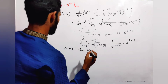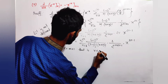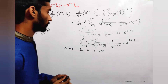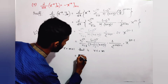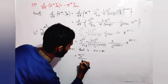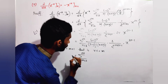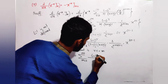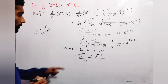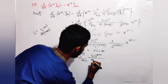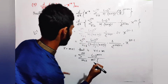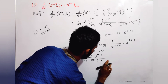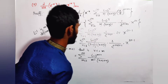We now perform a substitution: let m = r - 1, so r = m + 1. When r starts from 1, m starts from 0. Rewriting in terms of m: r! becomes (m+1)! and (n+r)! becomes (n+m+1)!. Also, r factorial in the denominator becomes (m+1)! and we write m factorial accordingly.